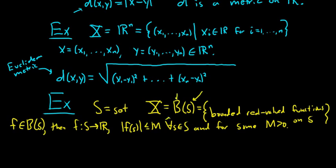We want to define a metric on this set. We're no longer looking at numbers or ordered pairs - we're looking at functions, trying to measure the distance between two actual functions. Define d(f,g) = sup{|f(s) - g(s)| : s ∈ S}.